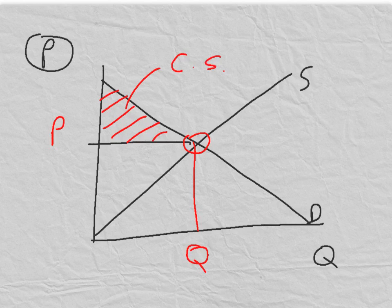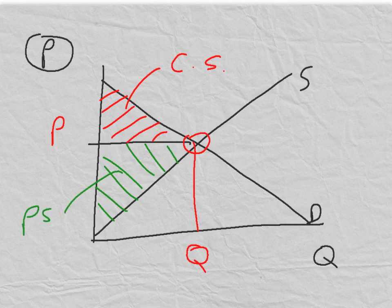The area between the equilibrium price and the supply curve is known as the area of producer surplus.